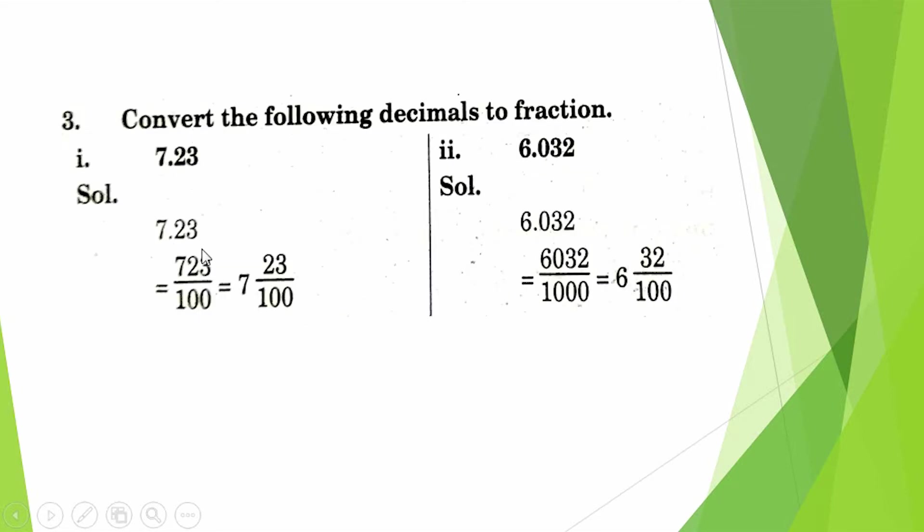Question 3: Convert the following decimals to fractions. 7.23. When we convert this point into 1 and draw zeros for how many values after the point, we get 723 ÷ 100, which equals 7 and 23/100.